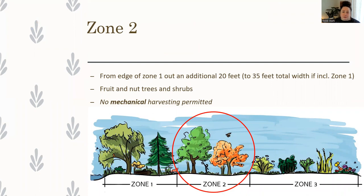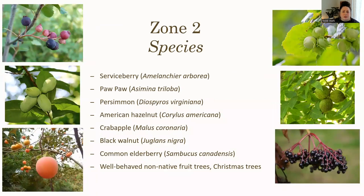Zone two is from those 15 feet back an additional 20 feet — so from 15 to 35 feet. Here you can plant fruit and nut trees if you're doing a multifunctional buffer. We don't want to do mechanical harvesting in zone two; we want just hand harvesting and don't want to bring in heavy equipment that could compact the soil. Zone two species that are great native options include serviceberry or shadbush, pawpaws, persimmons — we have a native persimmon that's a really great species — American hazelnut, crabapple, black walnut, and common elderberry. We can also consider well-behaved non-native fruit trees or Christmas trees in zone two, harvesting only a couple of trees a year and replanting those.